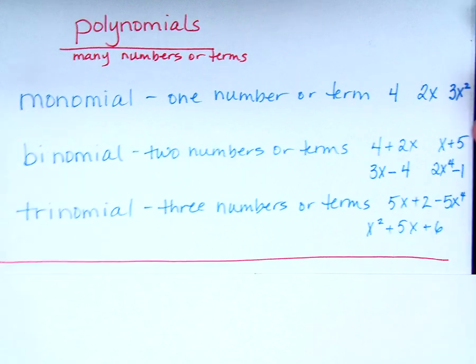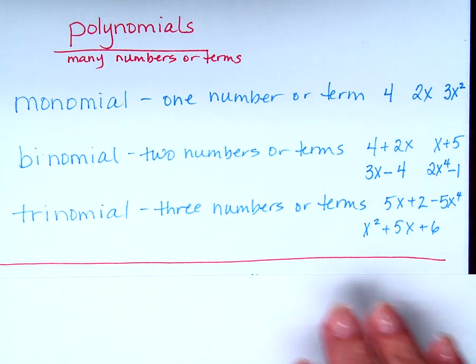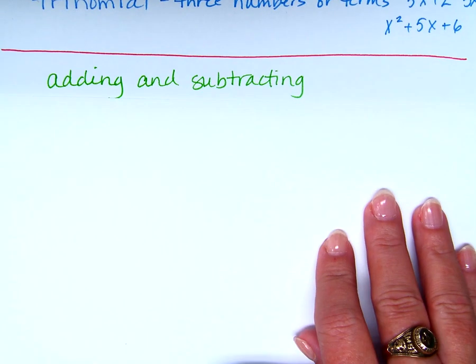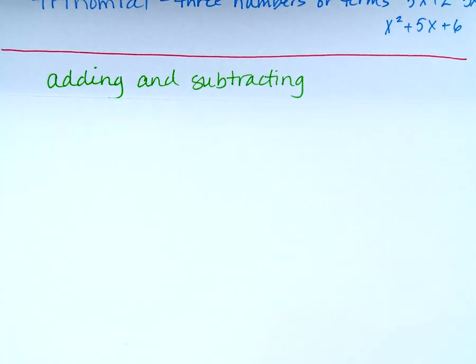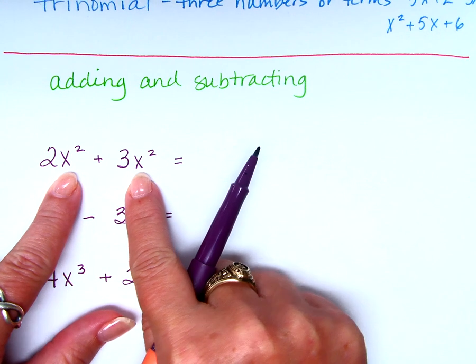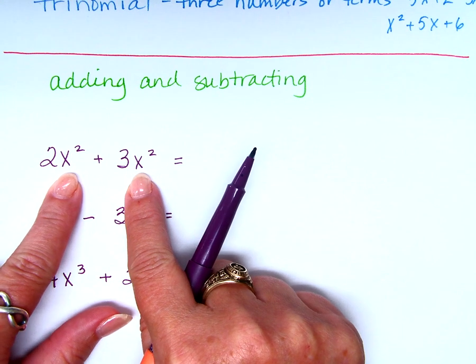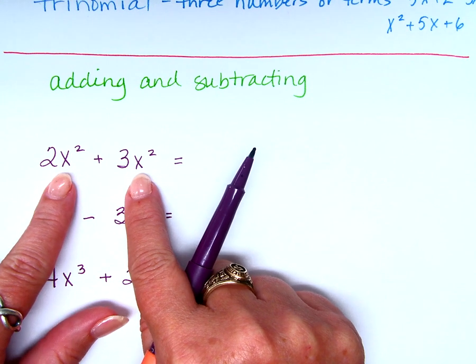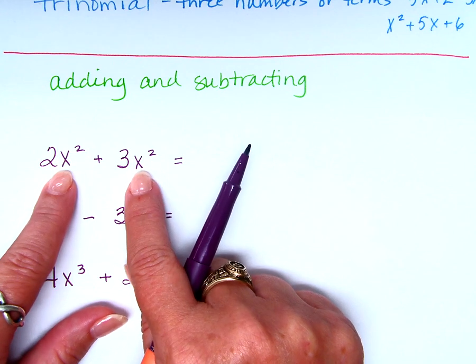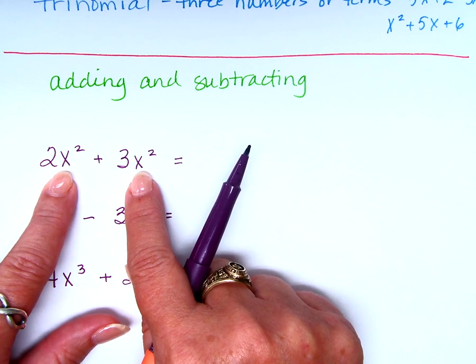Today we're just starting off, easing our way into polynomials. We're going to start by adding and subtracting. When we add and subtract, all we can combine is like terms. How do you know if something is like terms? The variables and the exponents are exactly the same.